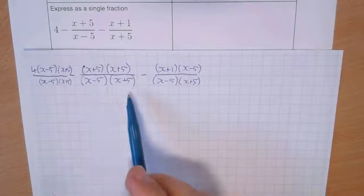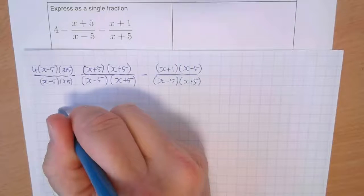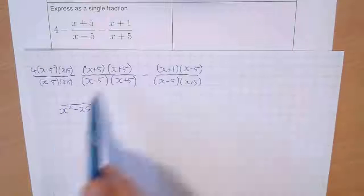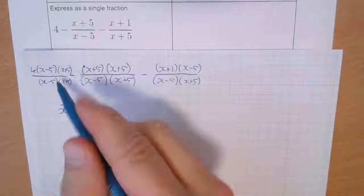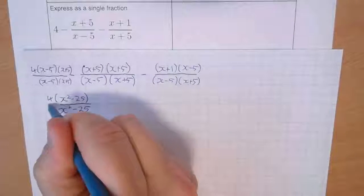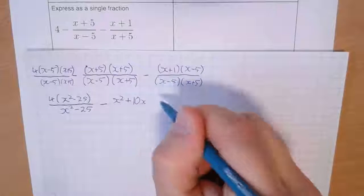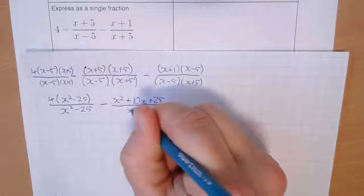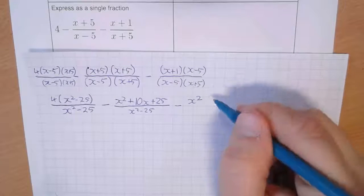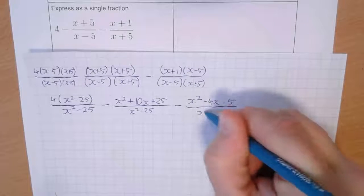I've now got everything with the same denominator (x−5)(x+5). Now, (x−5)(x+5) simplifies because the −5x and +5x cancel — it's the difference of two squares — giving x²−25. So I've got 4(x²−25) on the numerator for the first part. Then I'm subtracting (x+5)² which expands to x²+10x+25. And then subtracting (x+1)(x−5) which expands to x²−4x−5x+1·(−5), i.e. x²−4x−5. All over x²−25.